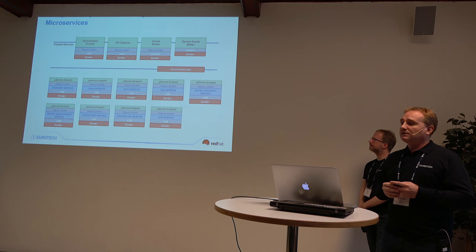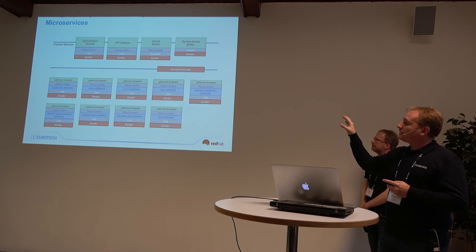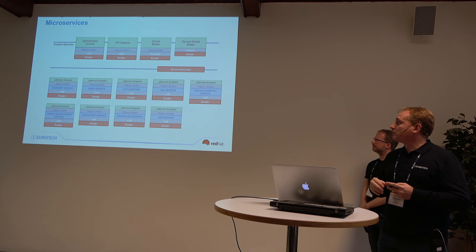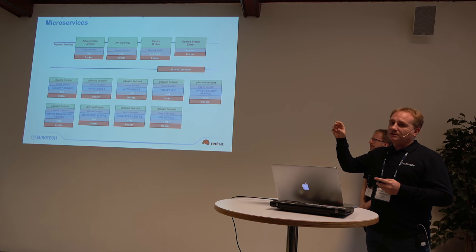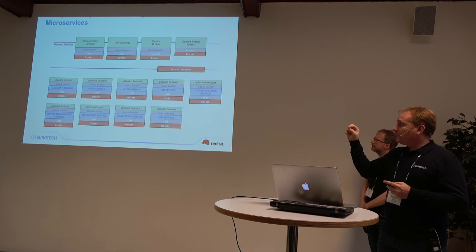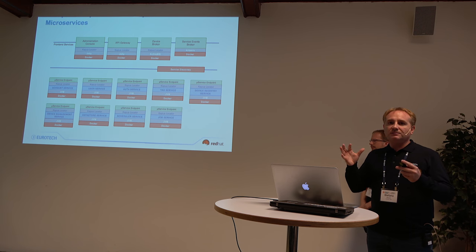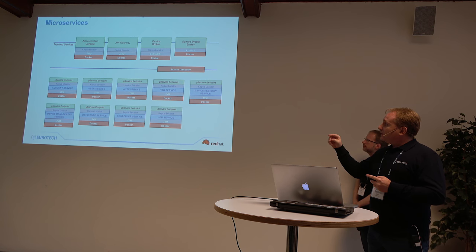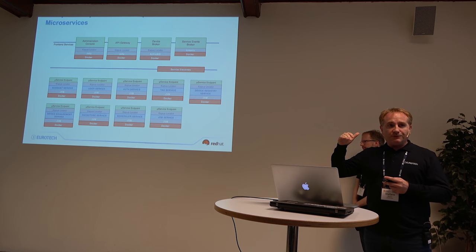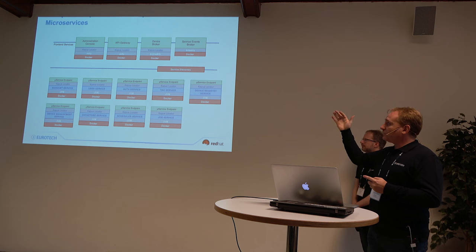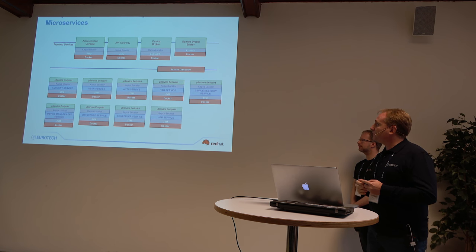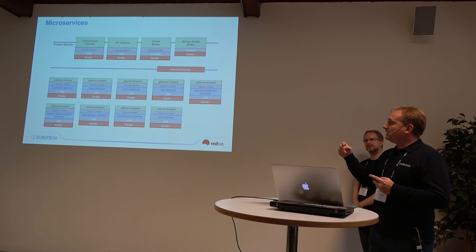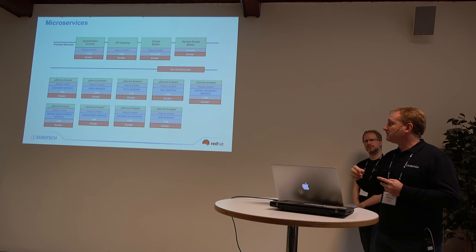The broad feature could be this projected diagram. Basically, all these components are still Docker containers and can be managed through OpenShift or Kubernetes, but each single application is much smaller — because the modules that before were embedded into one single application are now decomposed into several services. The front-ends are still the same: we have an administration console, a REST API, a device broker, and a service events broker. But now they don't embed the modules inside their own virtual machine; instead they interact with services on the back-end.